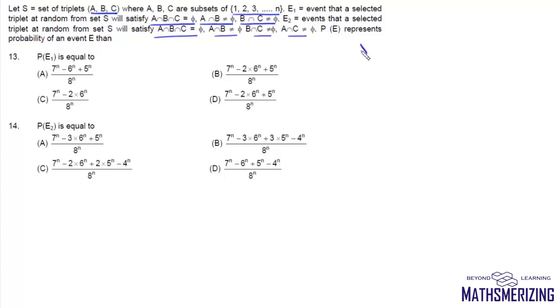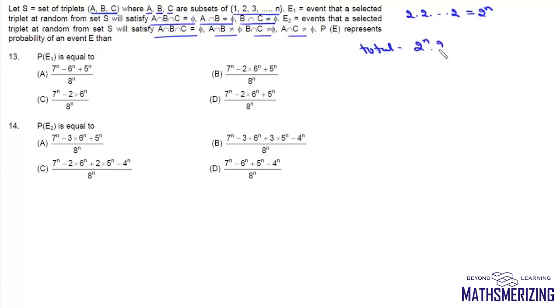Now if we look at the total number of cases for this given set, we can choose any subset in 2^N ways. So we have 2^N choices for A, 2^N choices for B, and 2^N choices for C. So the total number of choices will be 2^N × 2^N × 2^N, which is simply 8^N.